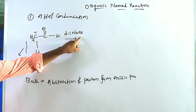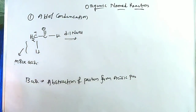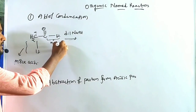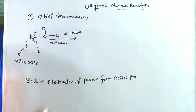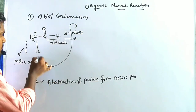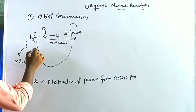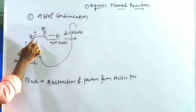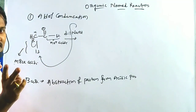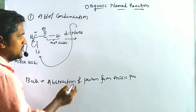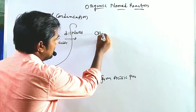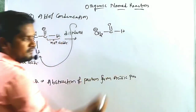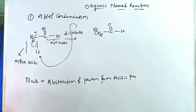The role of the base is to abstract the proton at the alpha position — not the CH position, which is not acidic. When the base abstracts the proton from the alpha position, the bonded two electrons shift toward the carbon atom, forming a negative charge: CH2⁻–C=O (with enolate resonance).